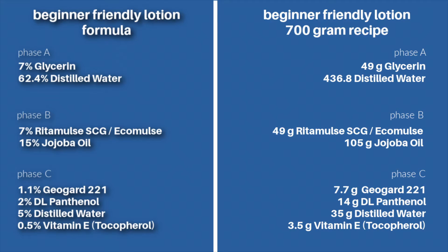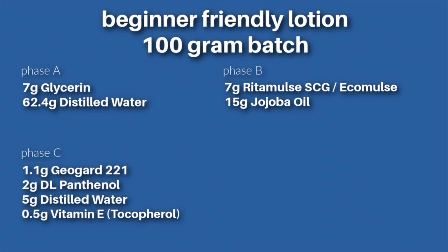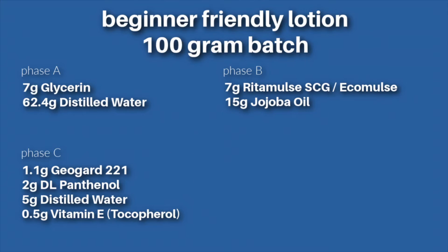Turning a formula into a recipe can be as easy as just changing all of the percentages to grams, and that would make a 100 gram batch. It's easy because you don't need to transfer the formula — if you have 7% of something, you need 7 grams to make a 100 gram batch.